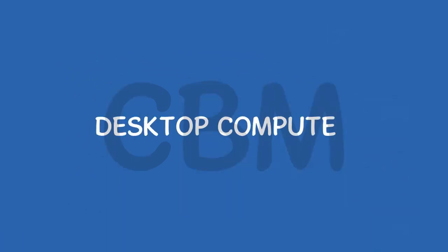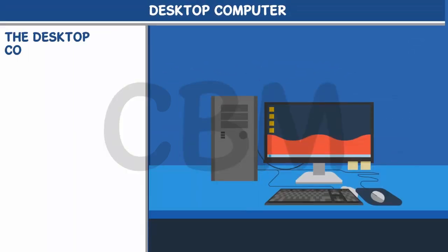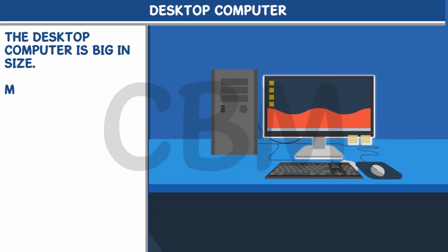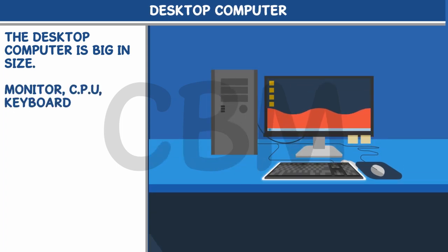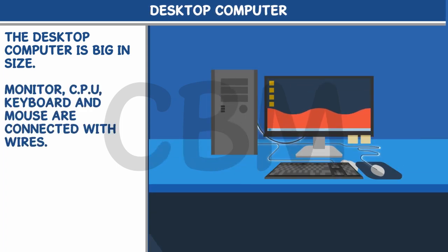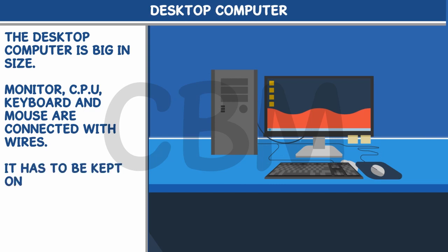Desktop computer: The desktop computer is big in size. Monitor, CPU, keyboard, and mouse are connected with wires. It has to be kept on the computer table.